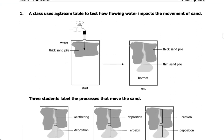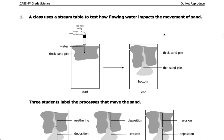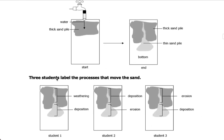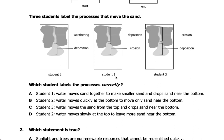Number one: a class uses a stream table to test how flowing water impacts the movement of sand. You can see a water faucet being poured onto a table with a thick pile of sand. After the water flows from the faucet, notice there is a stream of water pushing the sand down to the bottom of the stream table, leaving a thin pile of sand there. Three students labeled the processes that move the sand, and only one student labeled this correctly — which student is it?